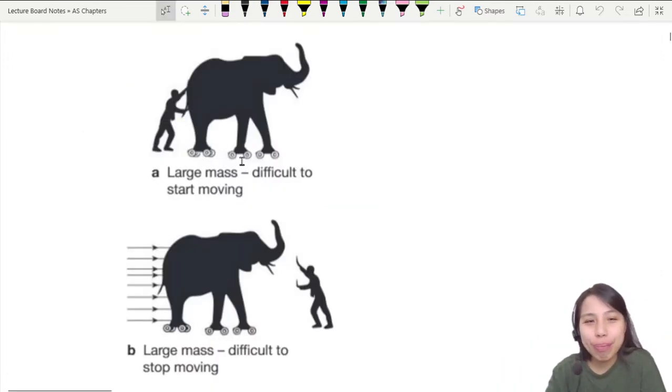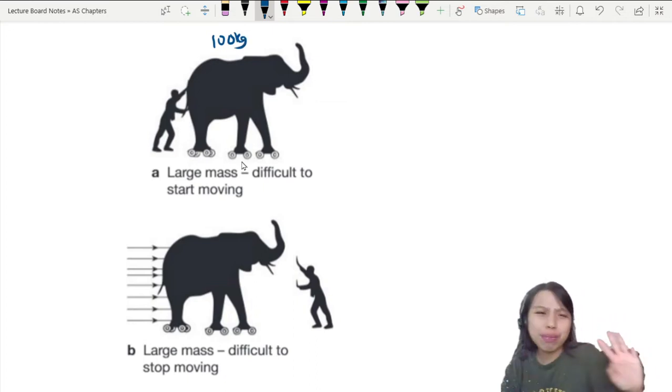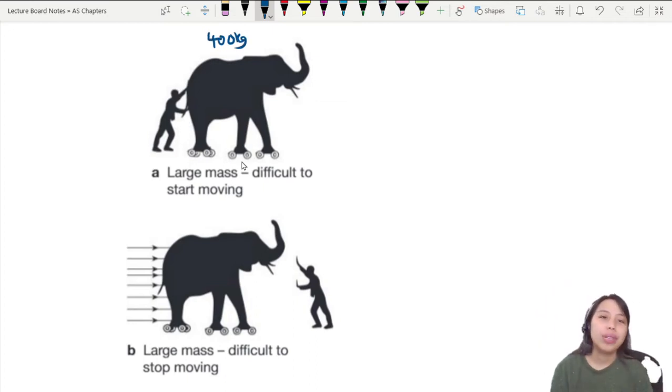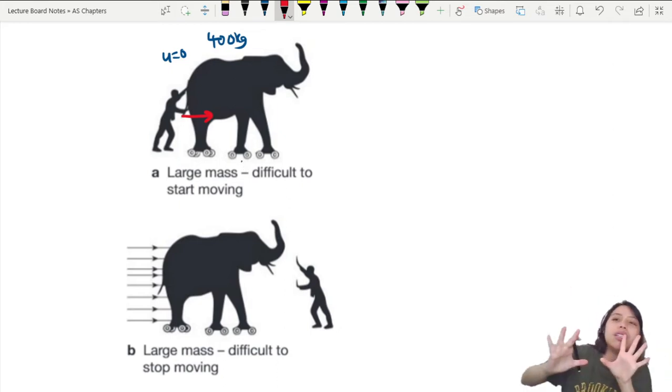For example, a big, big elephant. Let's say this elephant is 400 kg. And your elephant is at first at rest. Then this poor guy wants to push the elephant to get it to move. Is it going to be a tough job? Yes. Very hard to push. The elephant does not want to move.